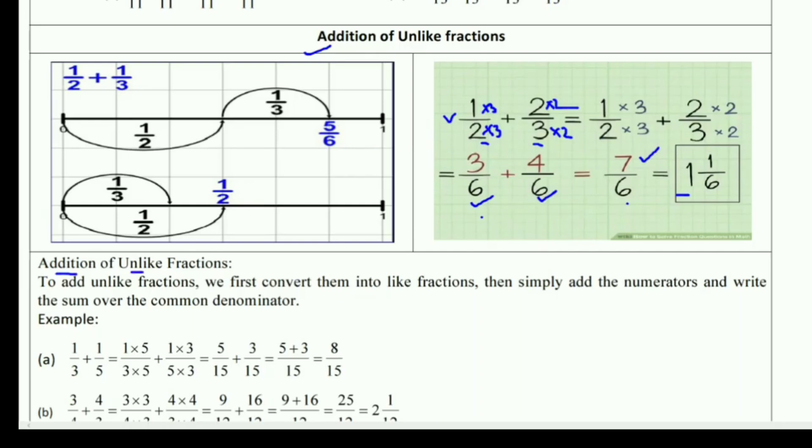Addition of unlike fractions: To add unlike fractions, we first convert them into like fractions, then simply add the numerators and write the sum over the common denominator. Example: 1/3 plus 1/5. Multiply the first fraction by 5 and the second by 3. This gives us 5/15 plus 3/15. Both denominators are now the same. Answer: keep 15 as the denominator, add the numerators: 5 plus 3 equals 8/15 is the answer.